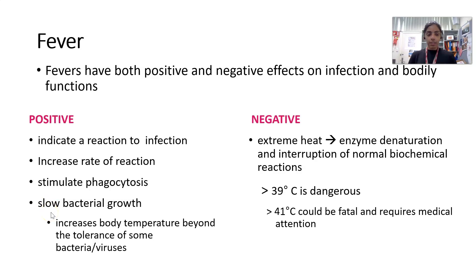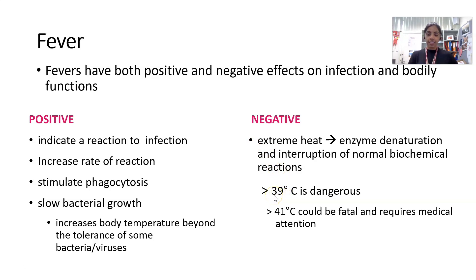The bacteria or virus in your body has its own tolerance level, and if the temperature goes beyond that level it may inhibit the pathogen's reproductive life cycle. On the negative side, any extreme temperature for a prolonged period could lead to enzyme denaturation and inhibit normal metabolic processes. A prolonged temperature of 39°C or more can be dangerous, potentially requiring medical attention, and if untreated could be fatal. So there are positives and negatives associated with fever.